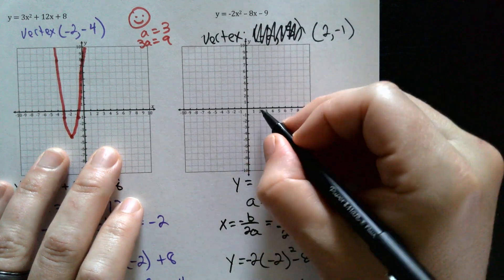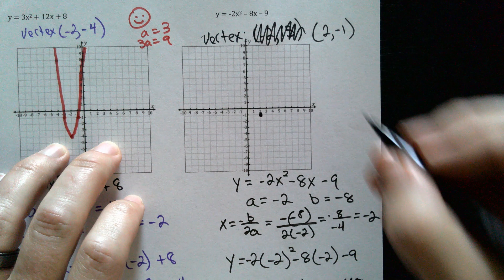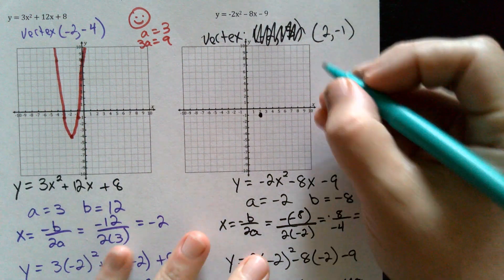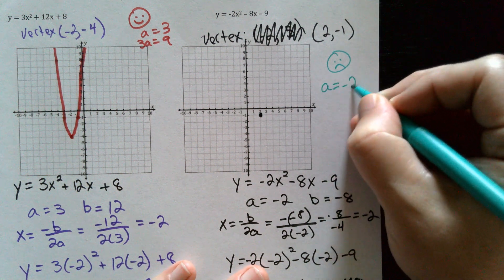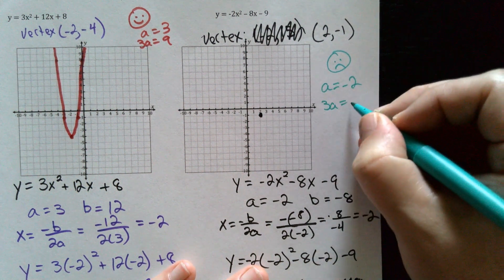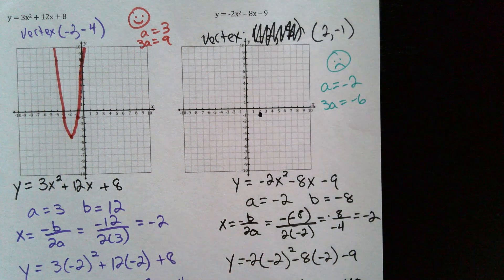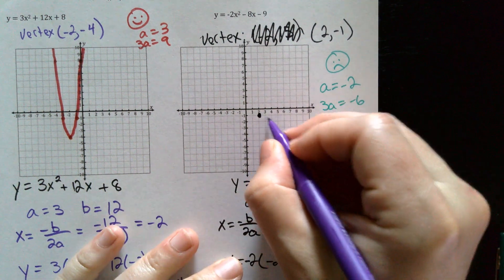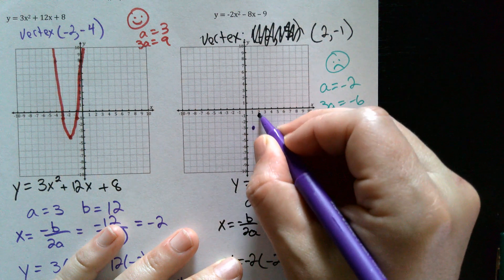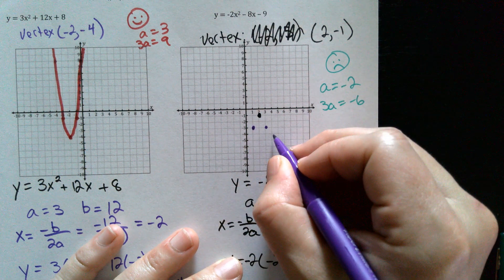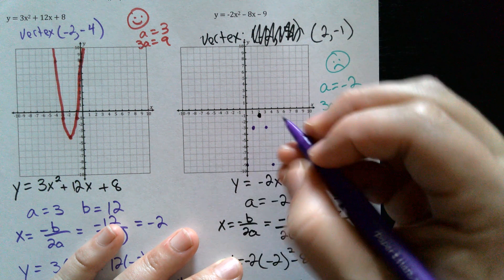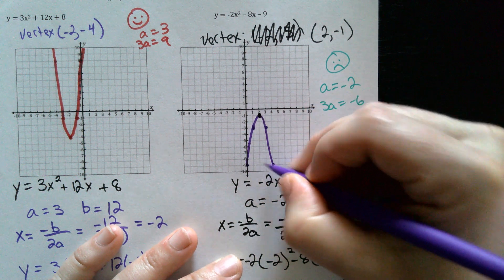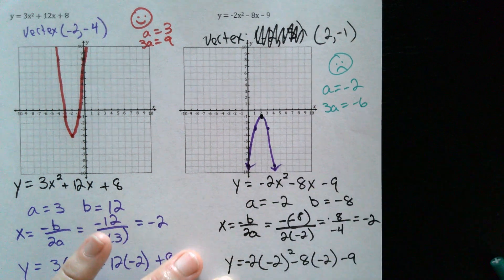So our vertex is negative two comma negative one. We go to two, negative one on the graph. It's opening downward because it's negative out front — frowny face. Our a is negative two, so our three a is negative six. Over one down two, same on the other side, and then over one down six, counting down six. And here is our last parabola. And that's it.